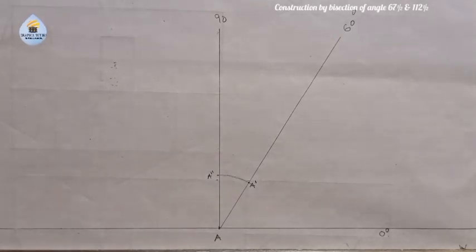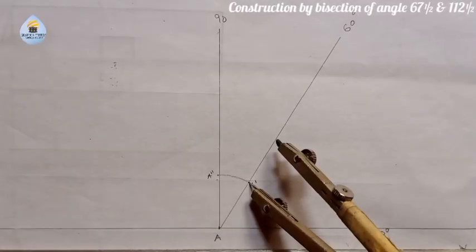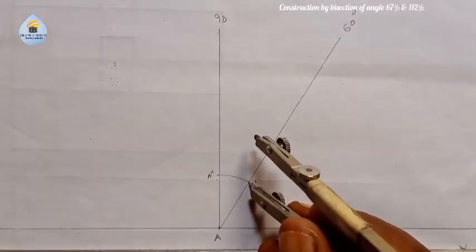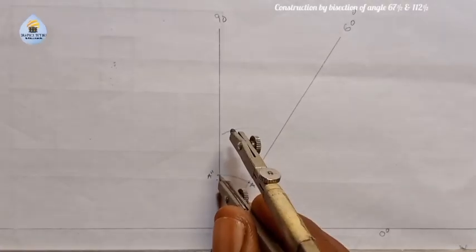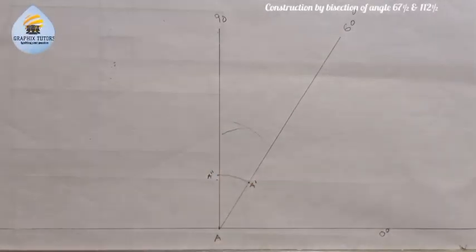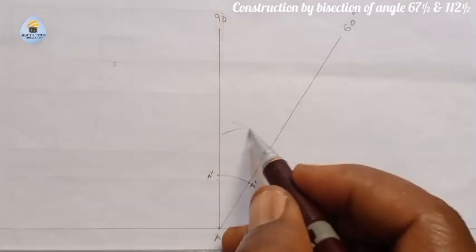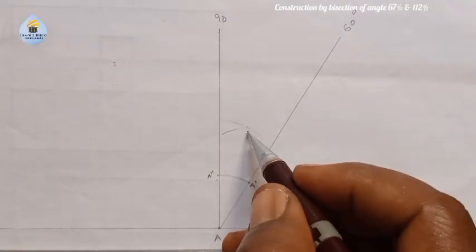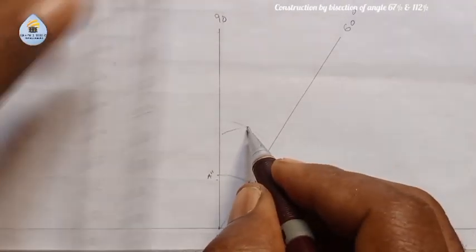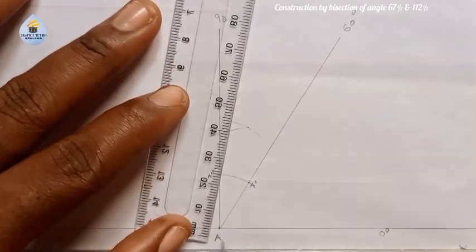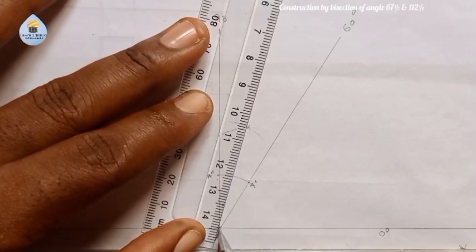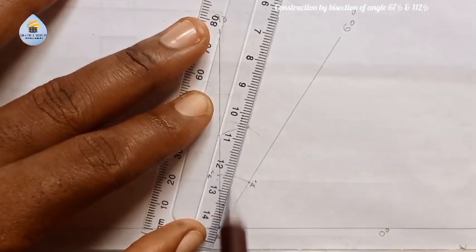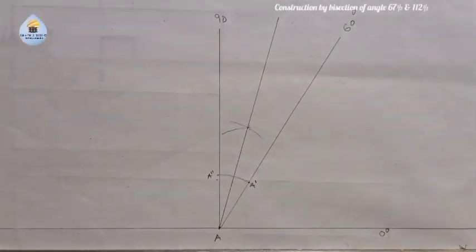If I bisect A-prime and A-double-prime — bisecting A-prime this way and A-double-prime this way — I'll get a center point where both arcs meet. Then I'll connect it to point A here, drawing my line through that center point.